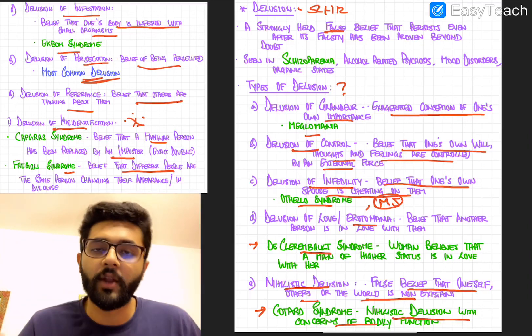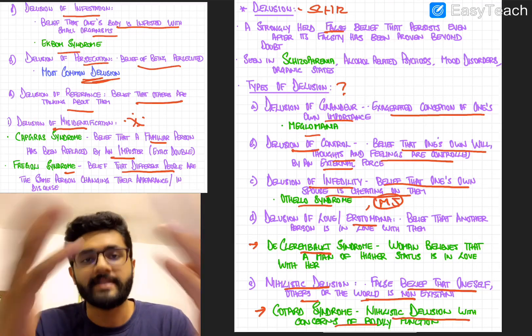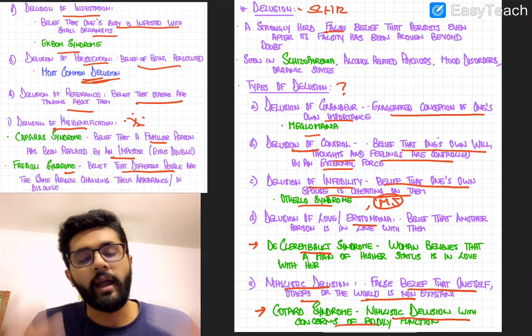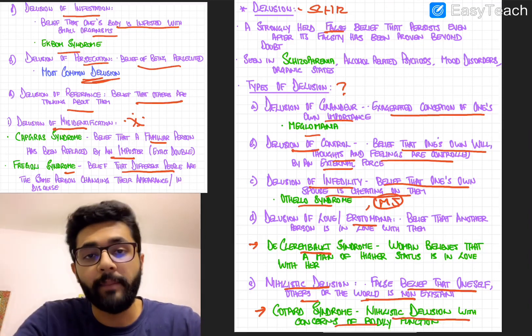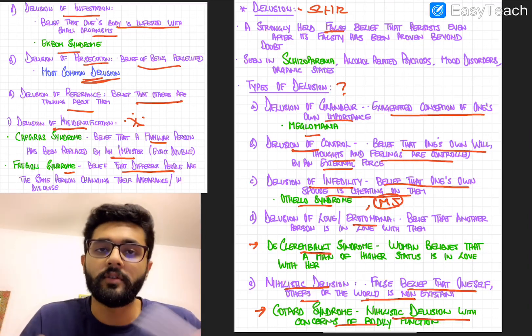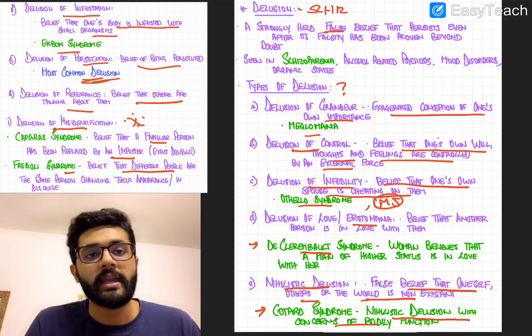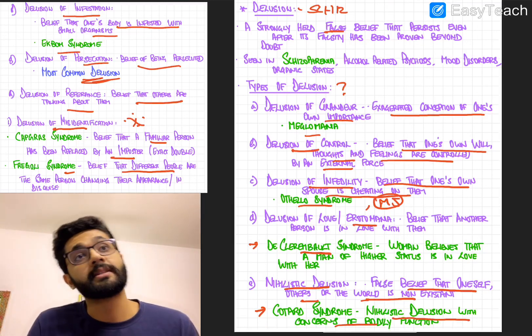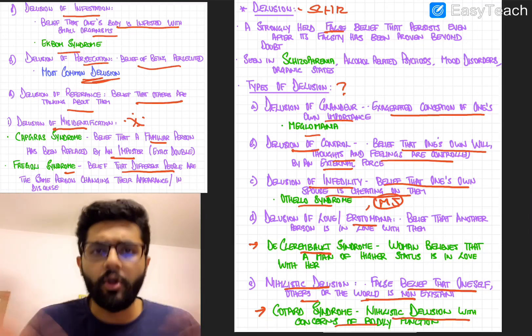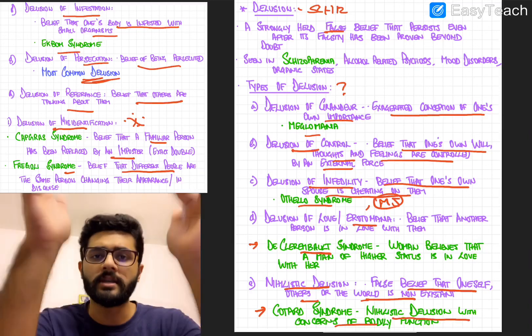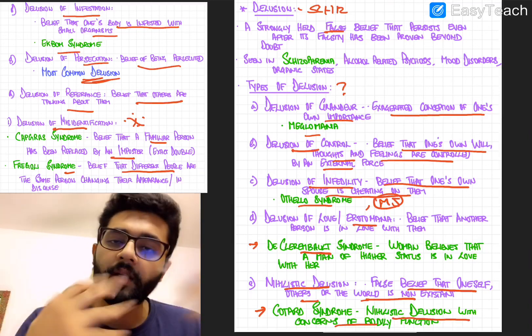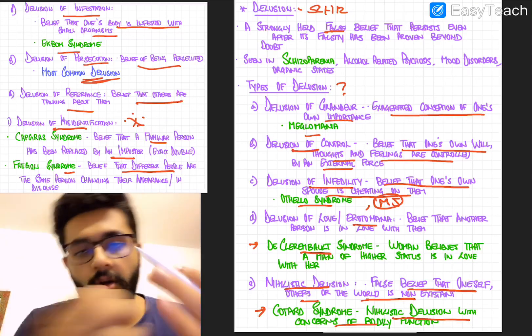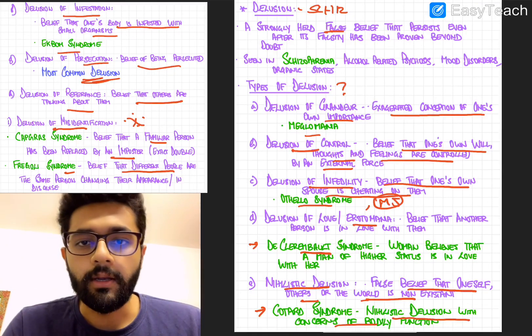But in Fregoli syndrome, they believe everyone is the same person. And in Capgras syndrome, they are unable, they identify a familiar person as an imposter. So if this individual sees his mother, he would not say it's his mother, but he would say it's an imposter of his mother who looks talks and behaves exactly like his mother, but is an imposter of his mother. So a familiar person is recognized as an imposter or a body double.